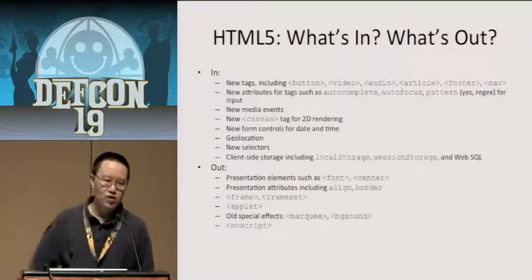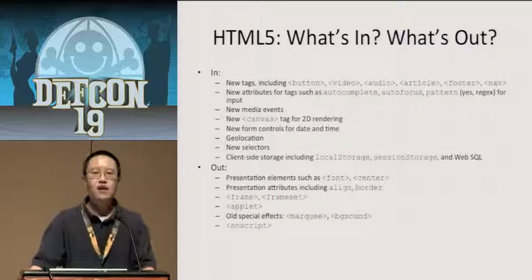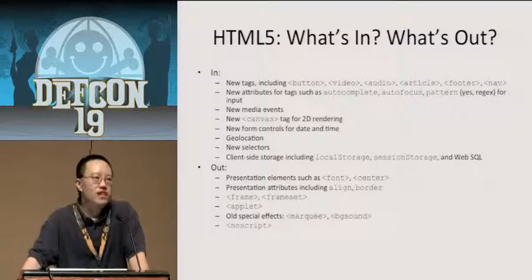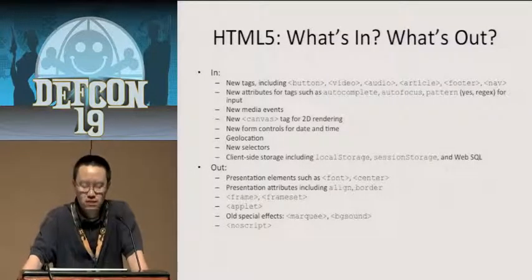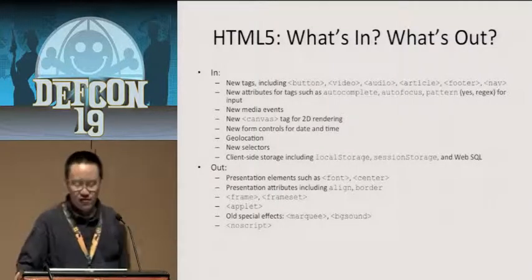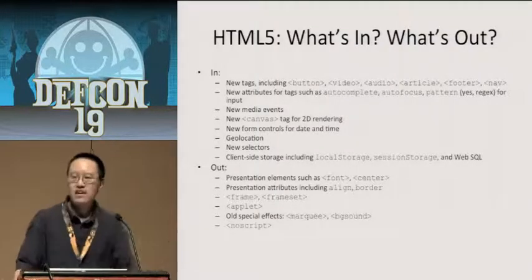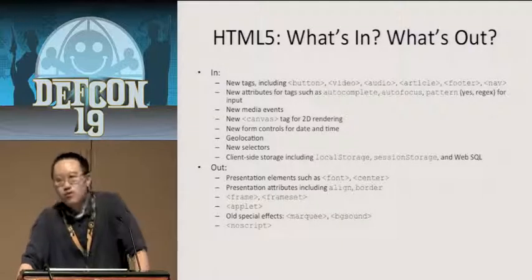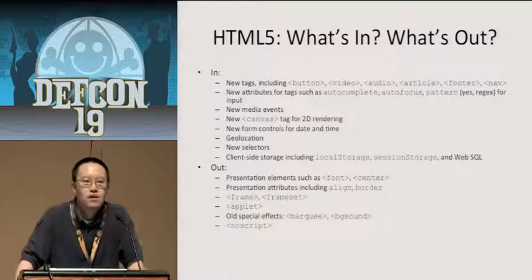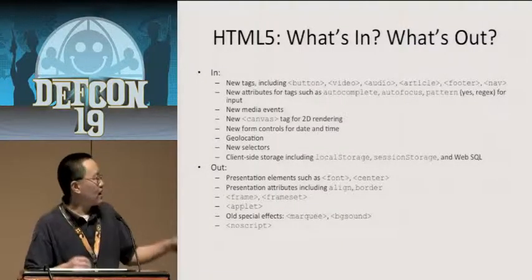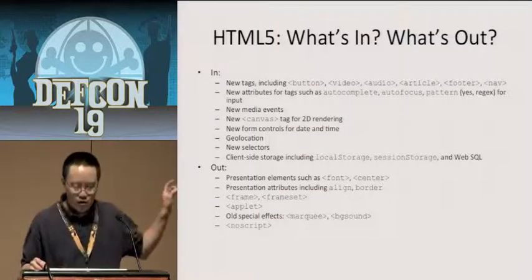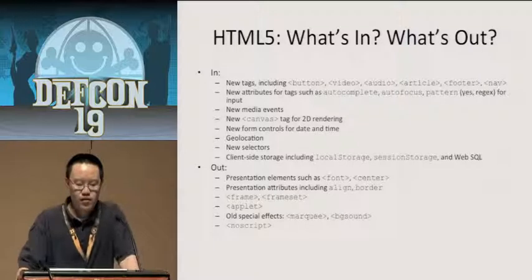Here's a quick summary on what's in HTML5. A whole bunch of new tags — video, audio. There are also semantic tags like article, footer, and nav. Back in the day, people used div ID equals nav, or div ID equals footer, or div ID equals header. Now instead of a div tag we just have an article tag — though I know in Chrome I can't get too much working with the article and footer tags.